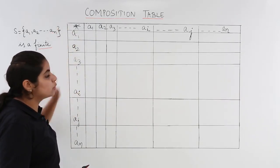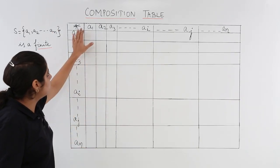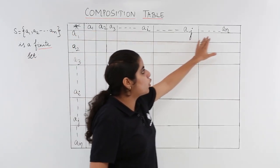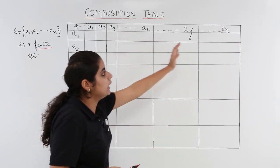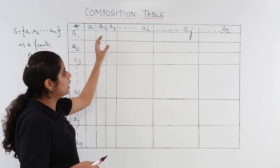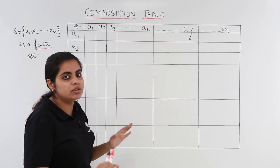This star sign denotes the binary operation and one horizontal row from ai, aj till an. So a1, a2, a3 via ai, aj till an. This is the first step.